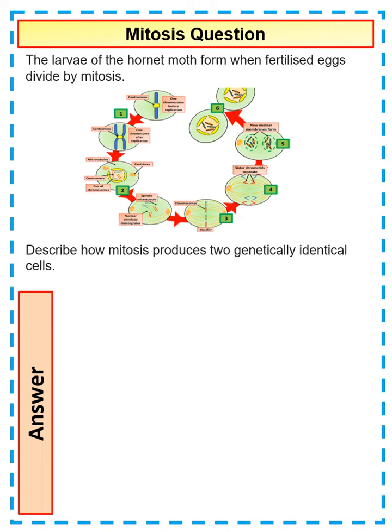We're going to have a look at a level 3 question on mitosis. In this question, the larvae of the hornet moth form when fertilised eggs divide by mitosis. It tells you that you need to talk about mitosis in the question — specifically, describe how mitosis produces two genetically identical cells. So we're going to have to physically talk about the process of mitosis.